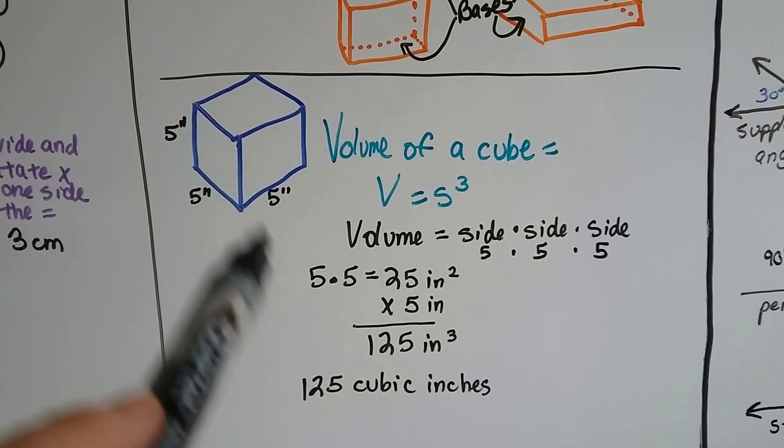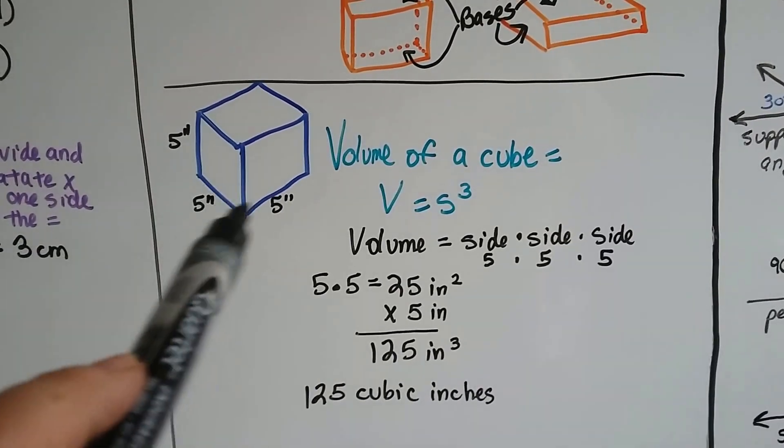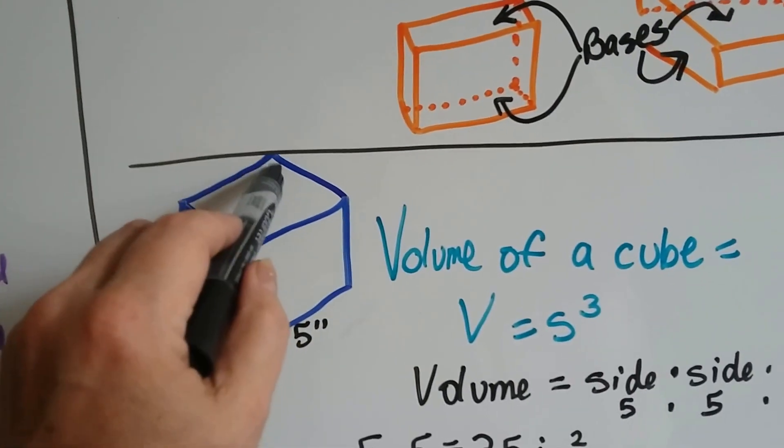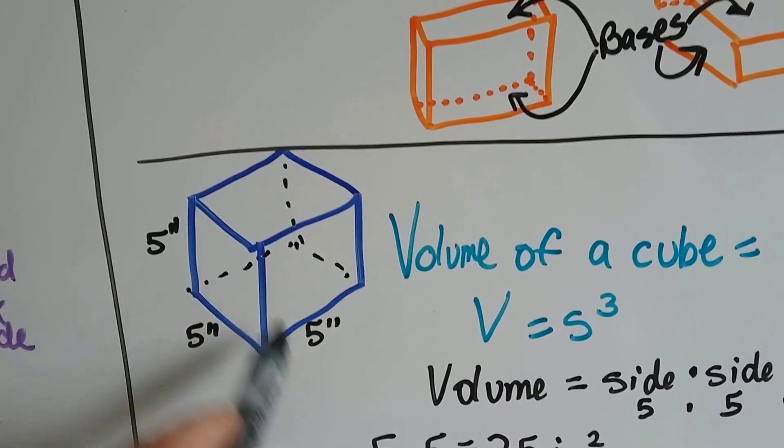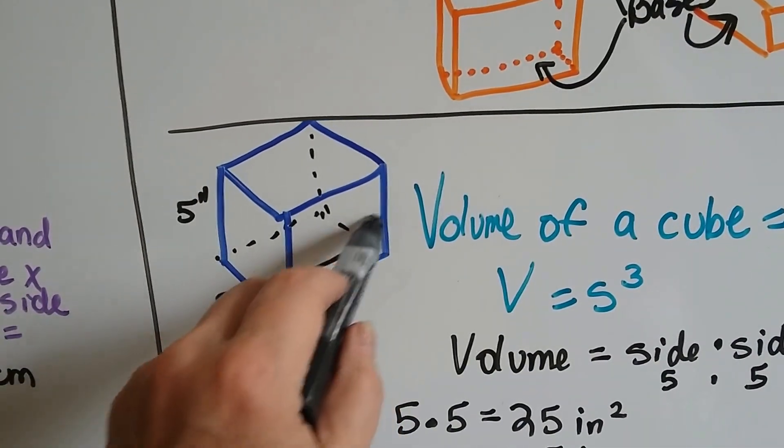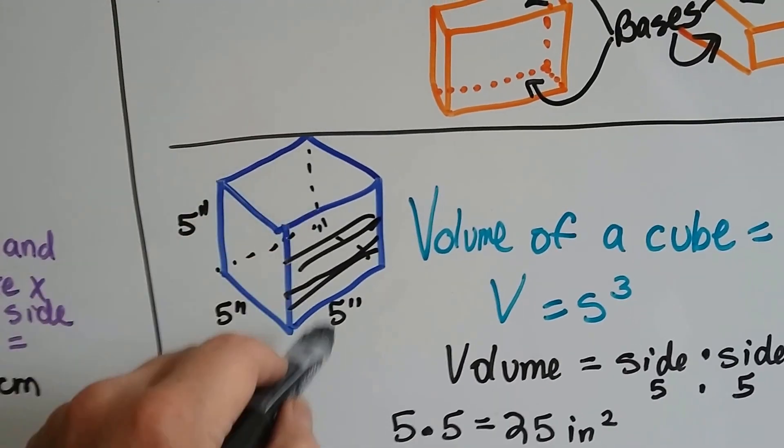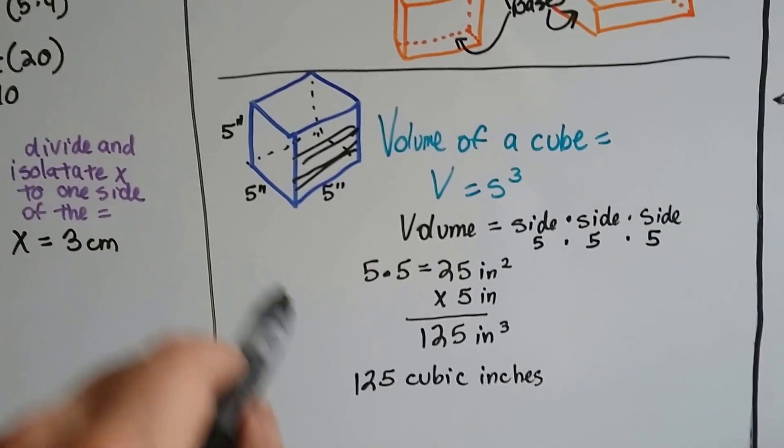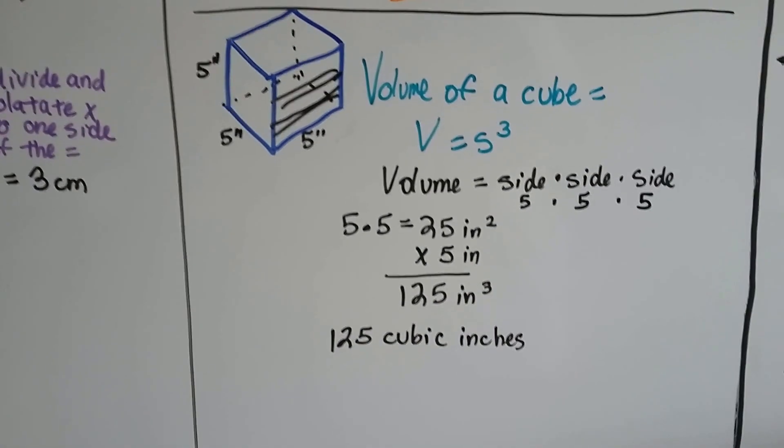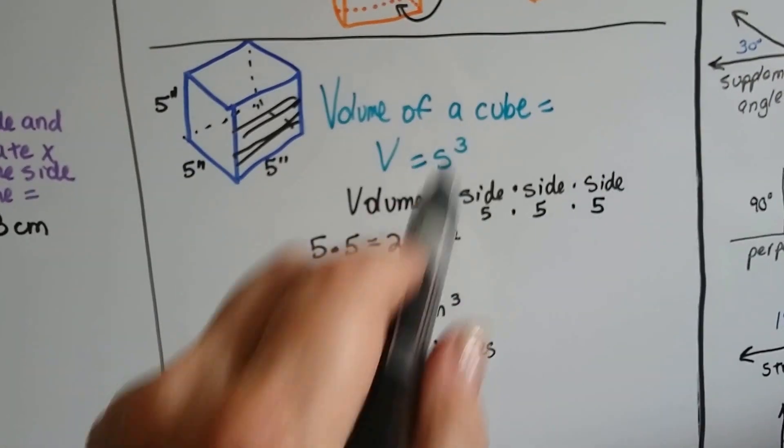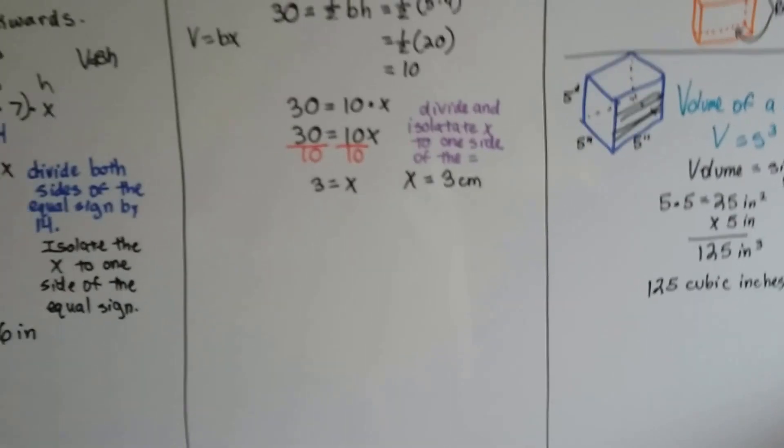What we do is we just multiply the base layer 5 times 5 which is 25, and we need to multiply it by 5 high. This one has got along its base 25 of them, and we need to make them 5 high. There's 5 layers high. So we do the 25 inches for the first layer and then we multiply it by 5 which is how high it is, and we get 125 inches cubed or 125 cubic inches. Just remember, volume of a cube is s to the third power - it's side times side times side, it's like lateral face times lateral face times lateral face.